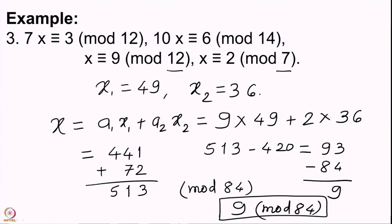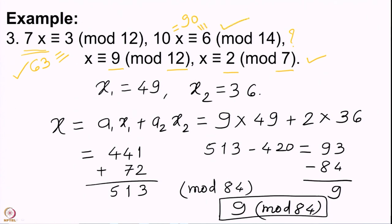Let us check: 9 mod 12 is indeed 9, and 9 mod 7 is indeed 2. Now for the original congruences: 9 × 7 = 63 ≡ 3 mod 12 — this is correct. And 9 × 10 = 90 ≡ 6 mod 14 — this is also correct. So we have been able to solve this different-looking system by first modifying it to a system where we can apply the Chinese remainder theorem, and then applying the CRT to obtain the solution.